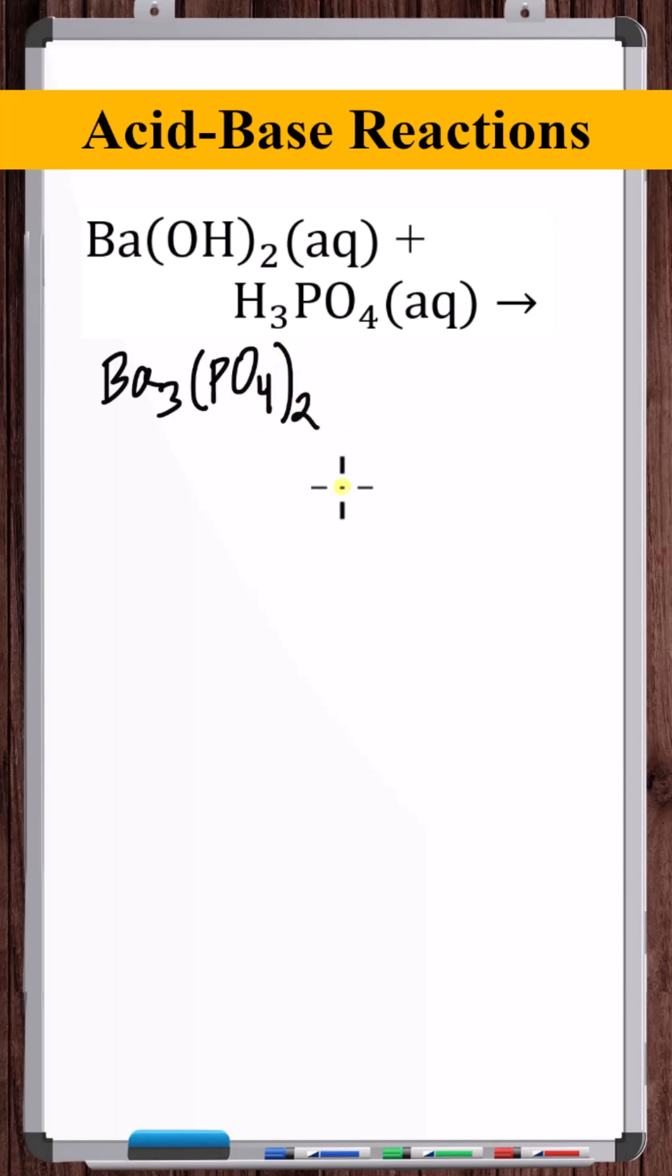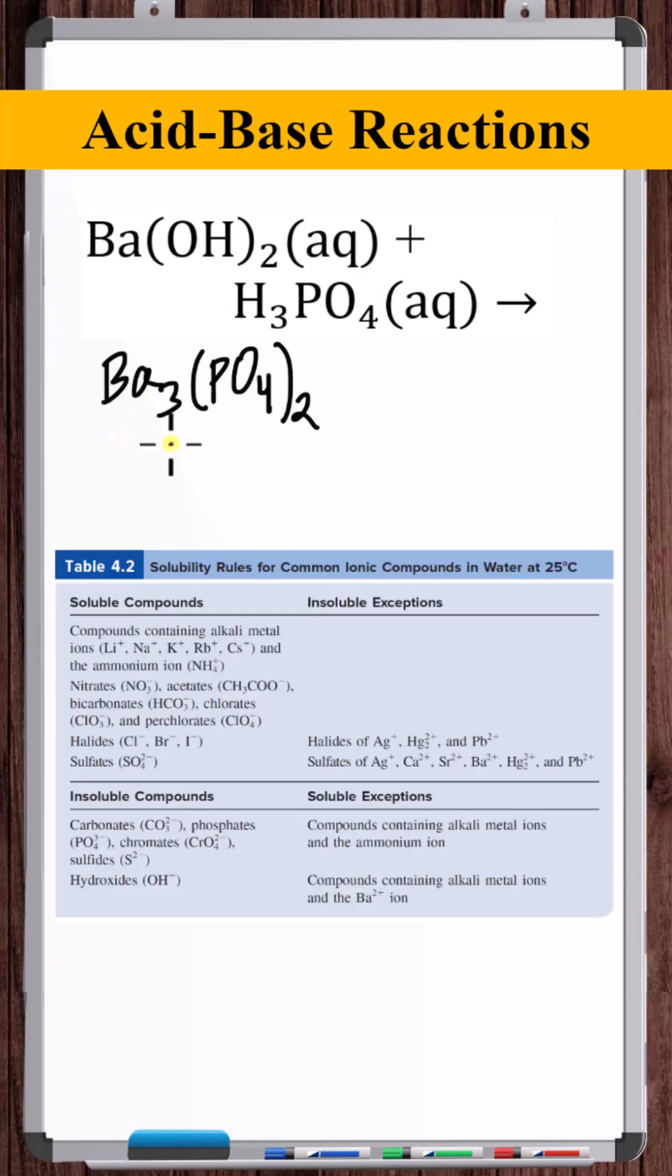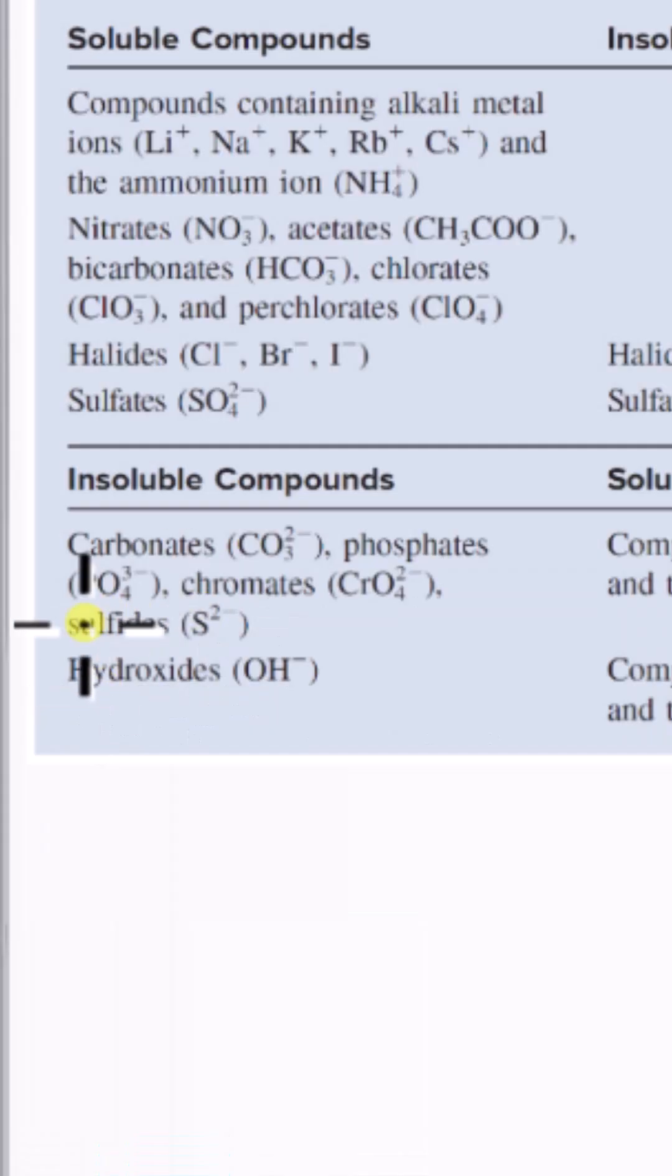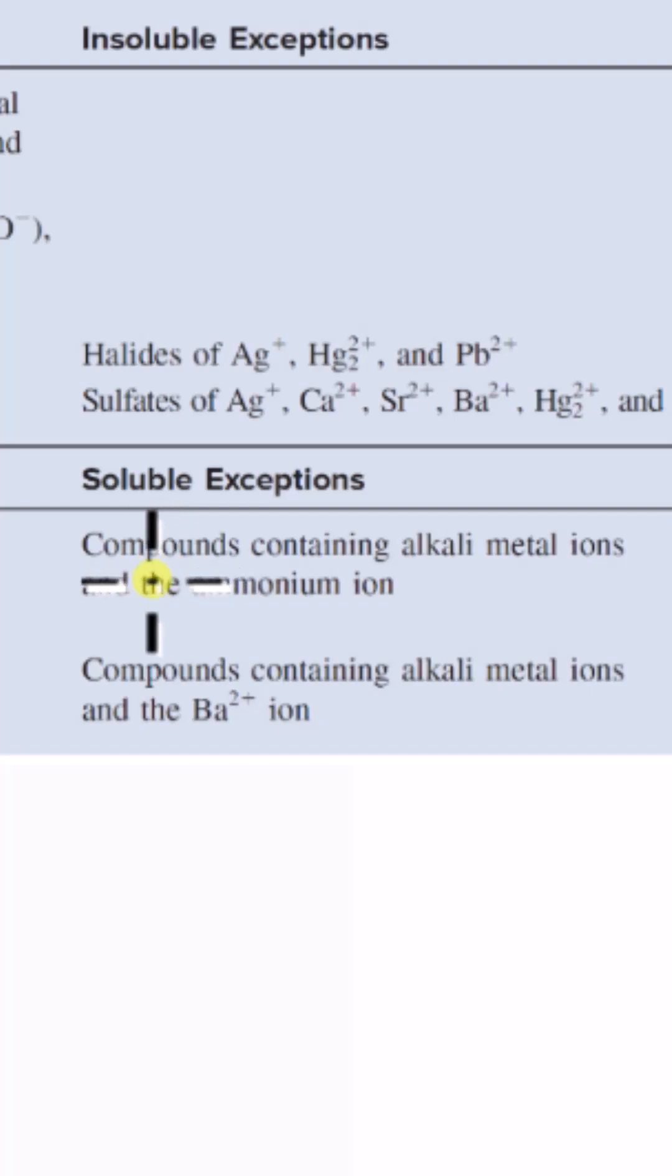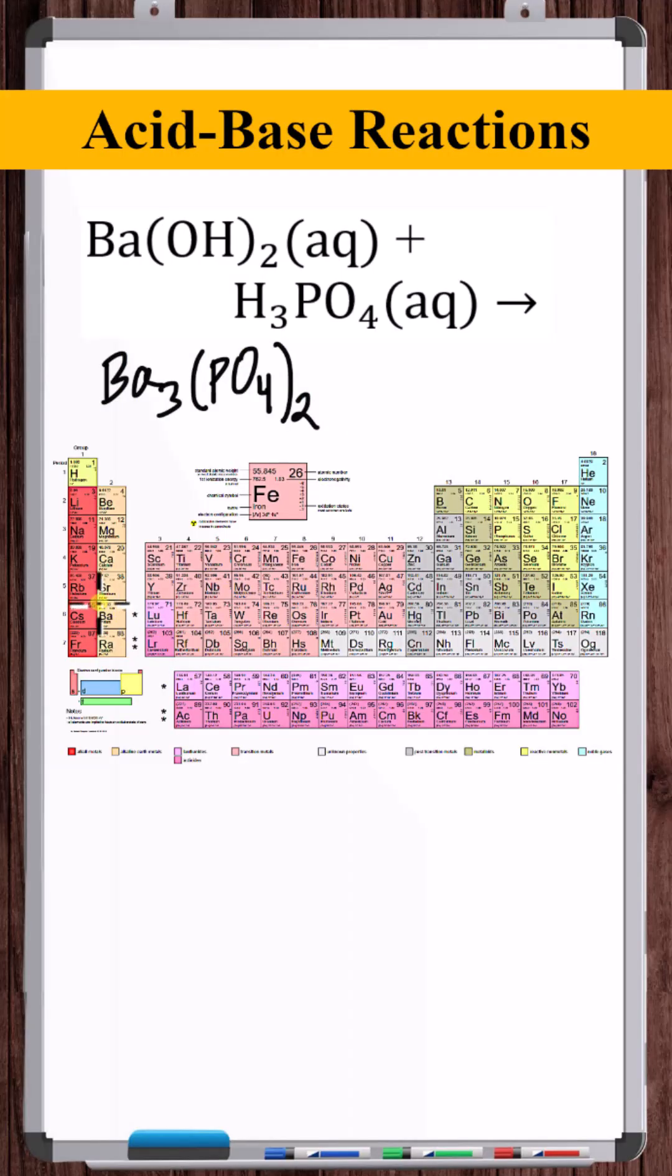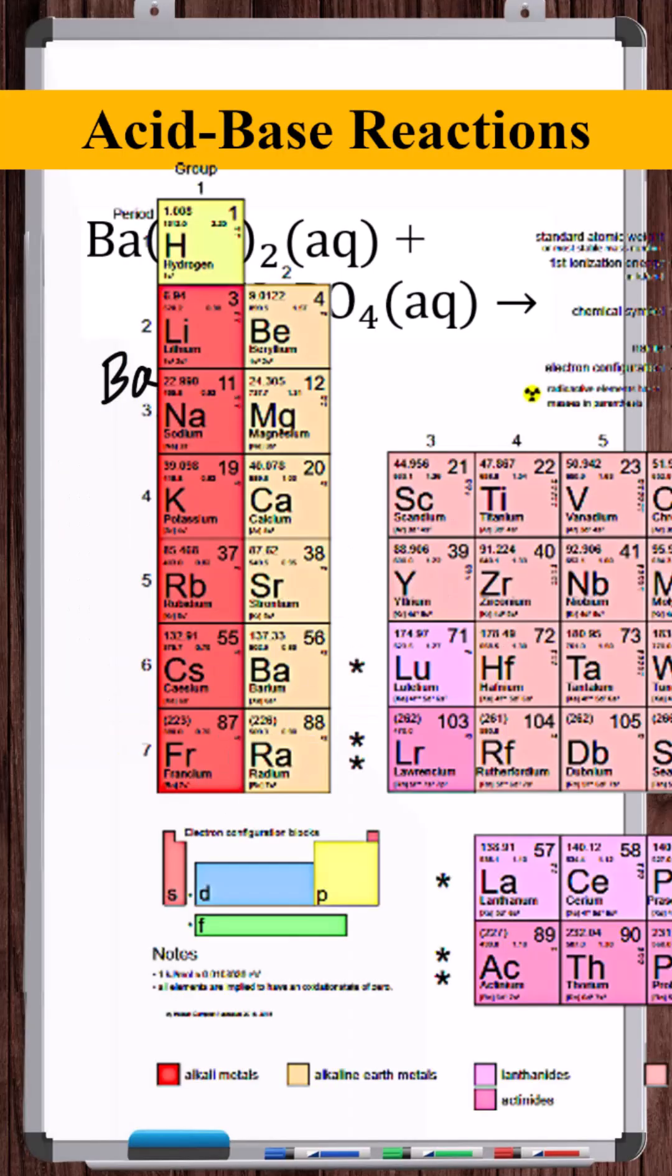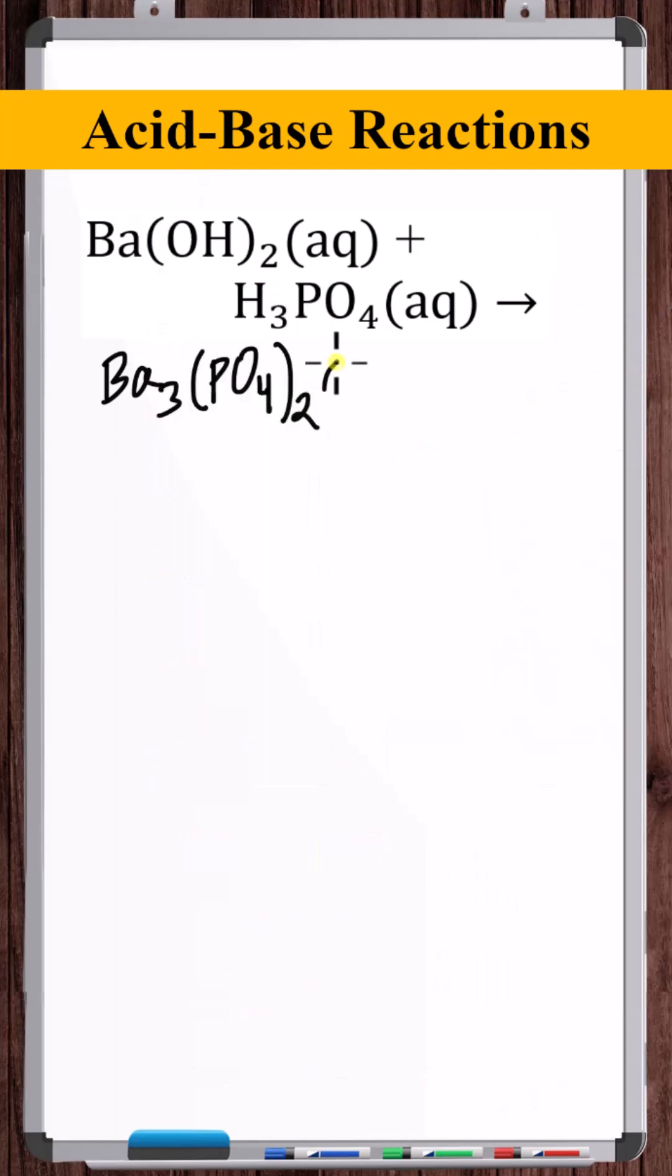Let's check the solubility rules of ionic compounds to see if this is a precipitate in this reaction. Phosphates are all insoluble, with soluble exceptions being compounds containing alkali metal ions and the ammonium ion. Barium is an alkaline earth metal, so not an alkali metal or the ammonium ion, so this is a precipitate solid. There's the salt.